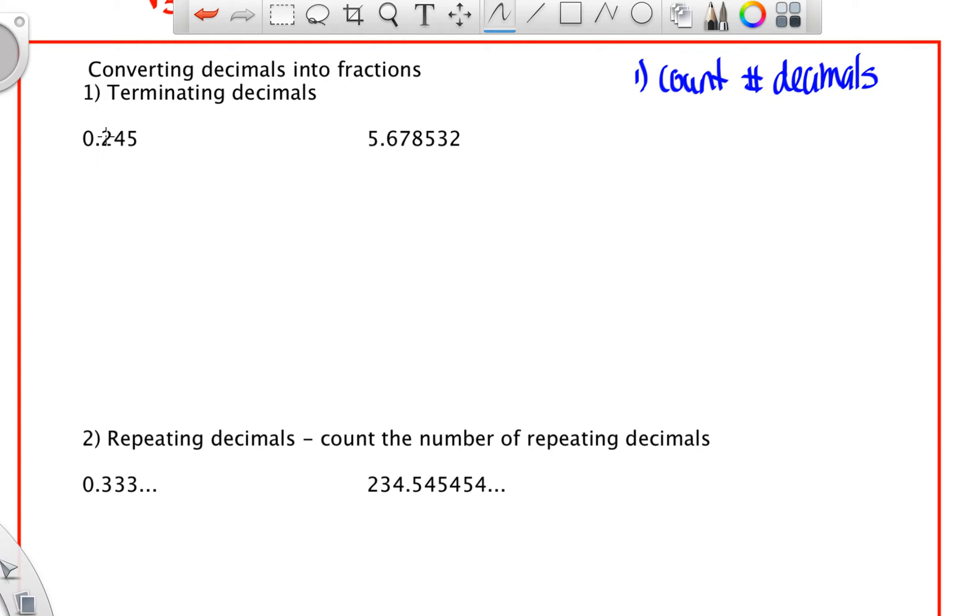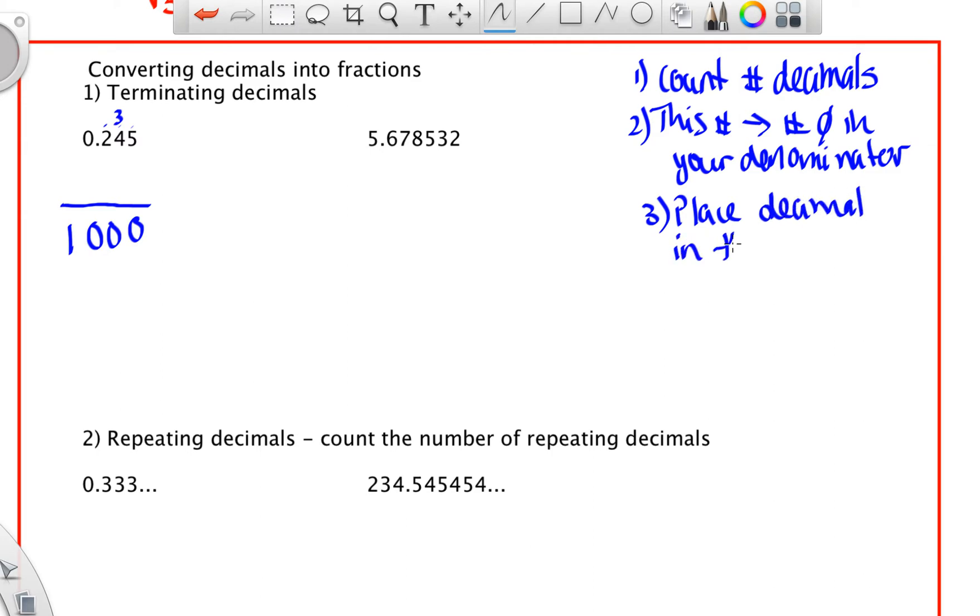So in this case, there are three. So one, two, three. So there are three decimal spots. And then this number becomes the number of zeros in your denominator. So I'm going to write this as a decimal. I need one, two, three zeros. And then I'm going to put a one in front. And then to finish, you just place the original number, place the decimal in the numerator without the decimal.